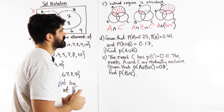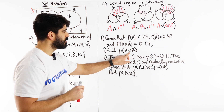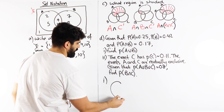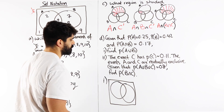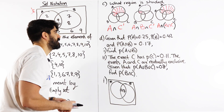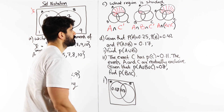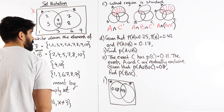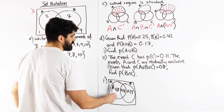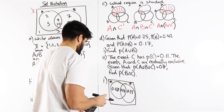Given that the probability of A is 0.25, the probability of B is 0.42, and the probability of A and B is 0.17, find the probability of A union B. With all Venn diagram questions, just do a sketch. We start with the middle: 0.17. The probability of A is 0.25, so we take away 0.17 to get 0.08 on the left of A. The probability of B is 0.42, take away 0.17 to get 0.25 on the right of B. So the probability of A union B is 0.25 plus 0.42 minus 0.17, which gives 0.5.